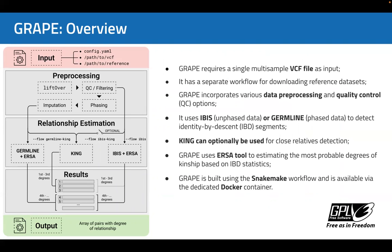Let's give a brief overview of the pipeline. CREAP is tailored to work with genomic data stored in VCF format. It requires a single multi-sample VCF file as input. It also has a separate workflow to download required reference data and incorporates various data pre-processing and quality control options.